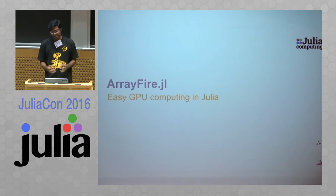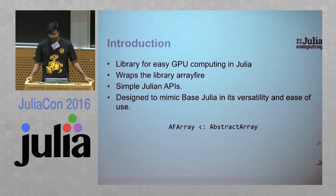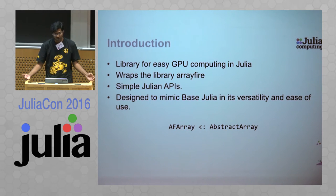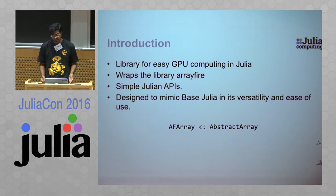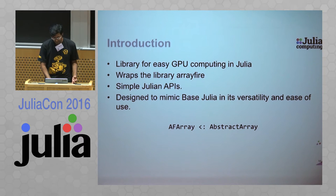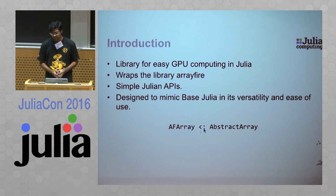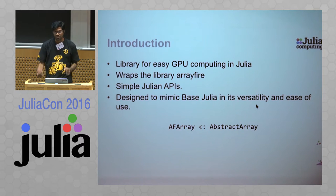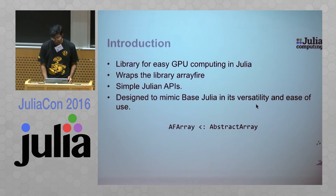What is arrayfire.jl? It is a library for easy GPU computing in Julia. It wraps the ArrayFire library, which has attempted to solve this low-level CUDA programming problem, and abstracts it to give you simple Julian APIs. There's an AFArray, which is a subtype of AbstractArray — an interface to a piece of memory on the GPU — which you use in a general purpose manner.